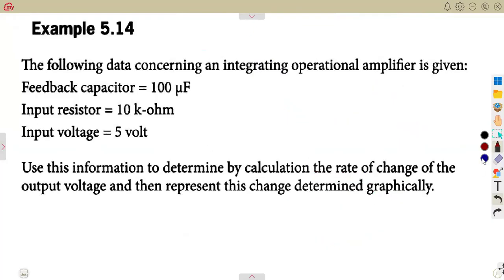Considering this other example, this is from hands-on. We are given the following data concerning an integrating operational amplifier. Take note, an integrating, that's an integrator. The feedback capacitor, we have got the capacitor, the input resistance given R_in, the input voltage. So use this information to determine by calculation the rate of change of the output voltage, then represent the change determined graphically.